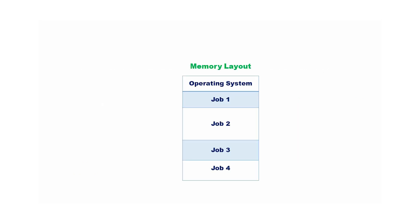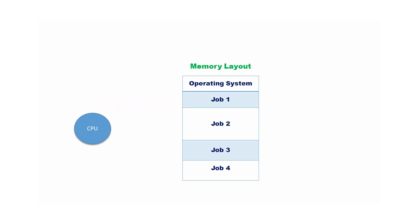Assume job 1 is selected for execution and the time quantum is 2 seconds. After 2 seconds, job 1 is forcefully deallocated from the CPU and the next job is selected for execution. Here job 2 is selected. After 2 seconds, job 2 is also released and job 3 is selected.